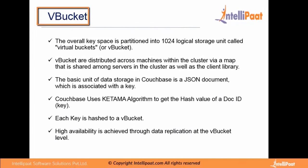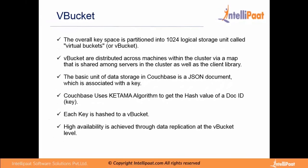What is a Vbucket? Vbuckets are nothing but logical storage units. The overall key space of Cloudspace is divided into 1024 partitions. These partitions, or Vbuckets, are distributed all over the cluster, and the details about these Vbuckets are maintained in a map. That map will be available to all the nodes of the cluster as well as to the client library, and it will tell us which particular node is responsible for which Vbuckets.